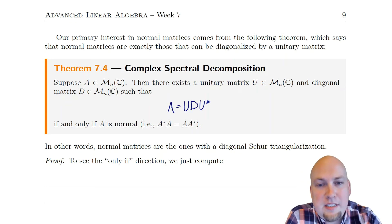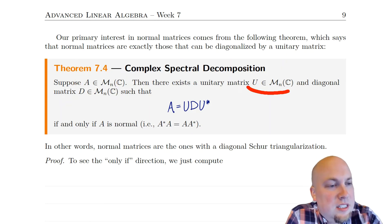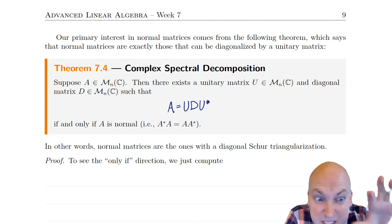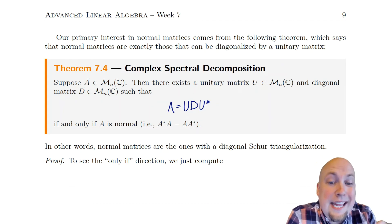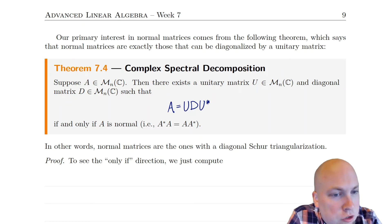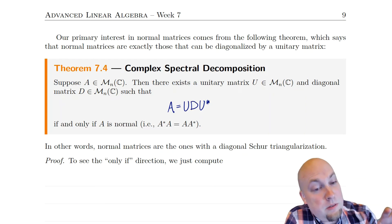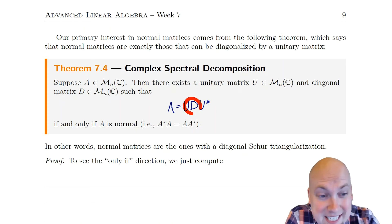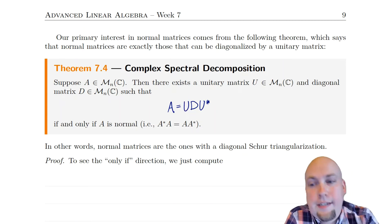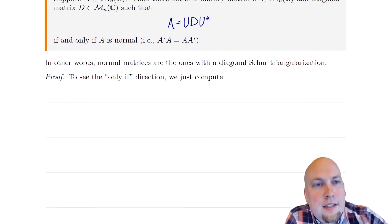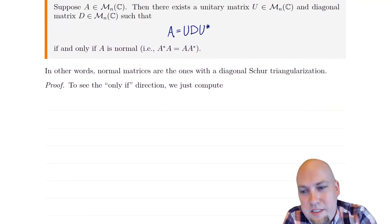It turns out the answer is exactly the normal matrices — normal matrices are unitarily diagonalizable. So that's what the theorem says. Suppose you've got any square complex matrix. Then there exists a unitary matrix U and a diagonal matrix D such that A is unitarily diagonalizable if and only if it's a normal matrix. Schur triangularization says we can always fit a triangular matrix in the middle, but if it's normal, you can go one step further and actually make it diagonal, not just triangular. Let's see where this theorem comes from — let's prove it.